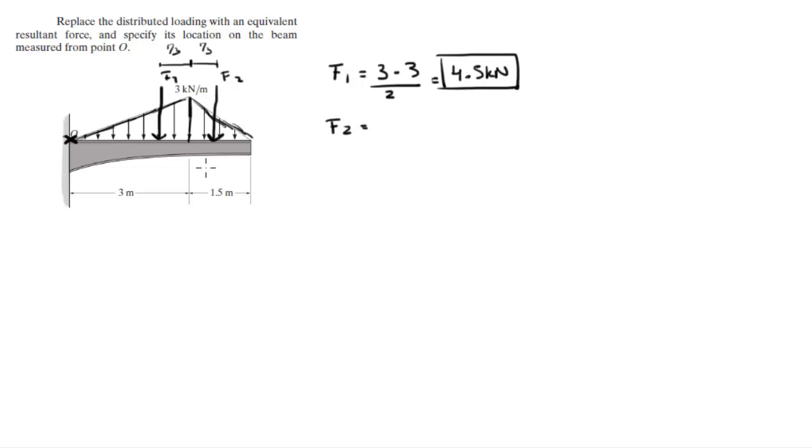F2 is equal to 3 times 1.5 divided by 2 because it's a triangle and that comes out to be 2.25 kilonewtons.